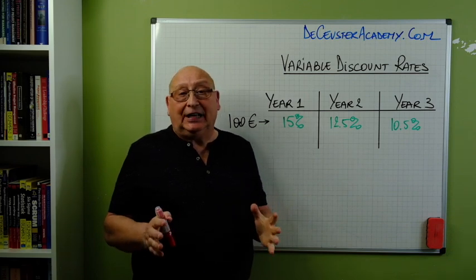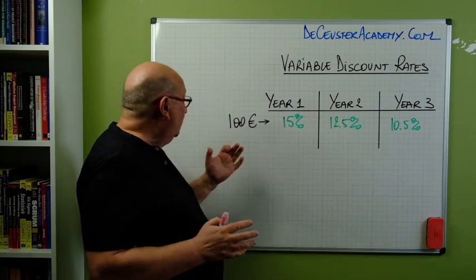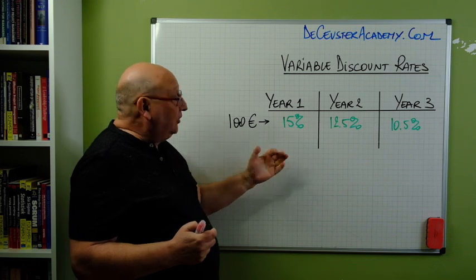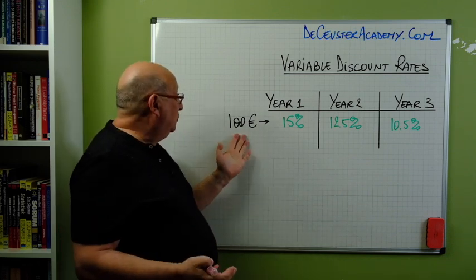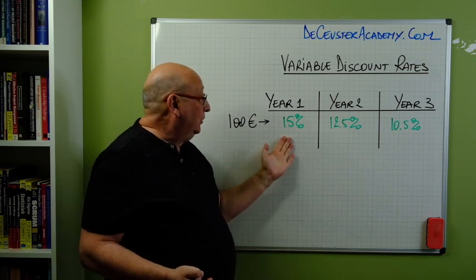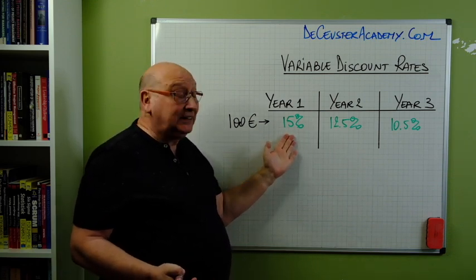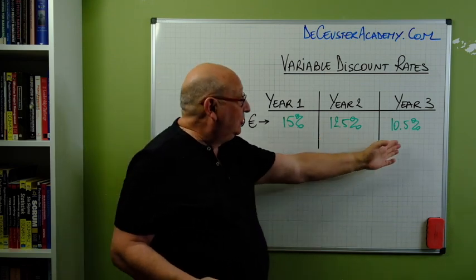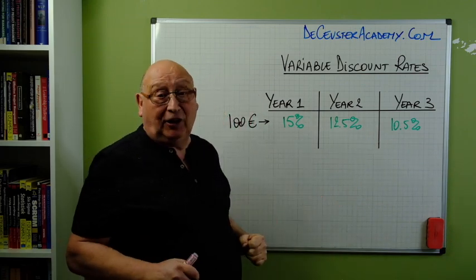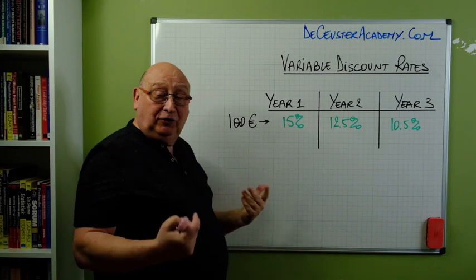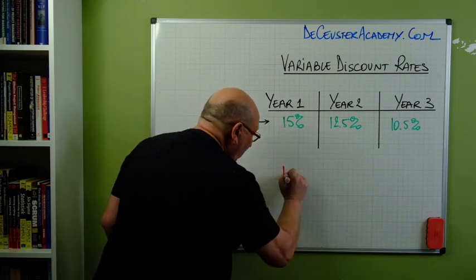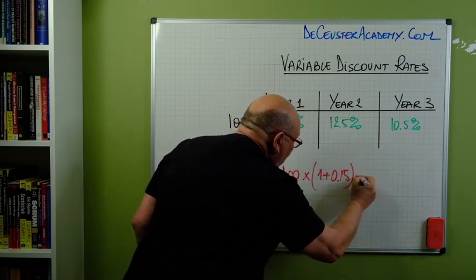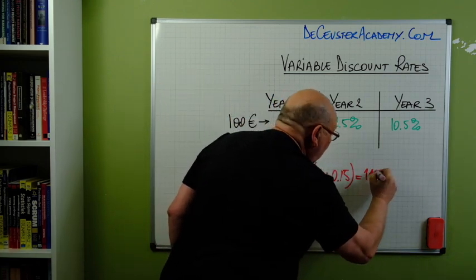In order to show you that, let's look at a simple exercise. Here we start again with 100 euro or 100 dollars. What we're going to do now is to calculate the future value of this 100 euro: year one with an interest rate of 15%. So we calculate 100 times 1 plus 0.15, which gives us 115 euro.